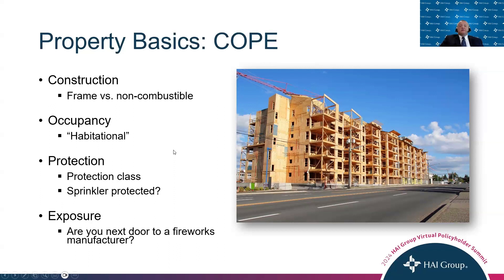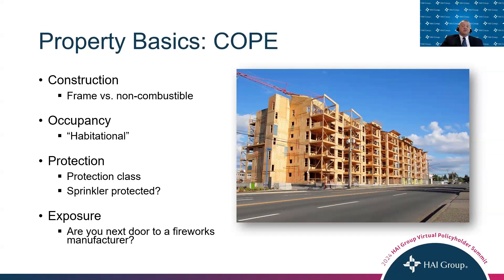Moving on to occupancy — the underwriter needs to know what the buildings are used for. In the habitational industry, this is what we insure. The most common occupancies are apartment buildings, office buildings, community centers, maintenance buildings, and storage buildings or mini warehouses. Some occupancies are prone to more losses than others. For example, apartment buildings all have a kitchen and cooking facilities, making them more susceptible to fire losses related to cooking.